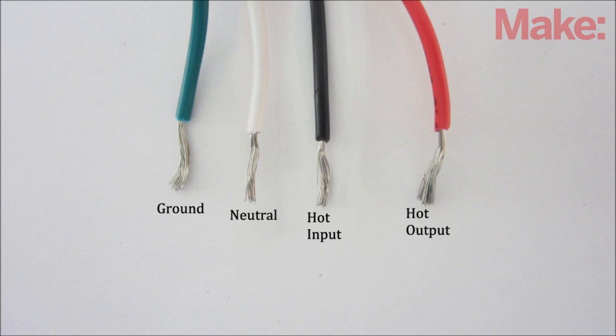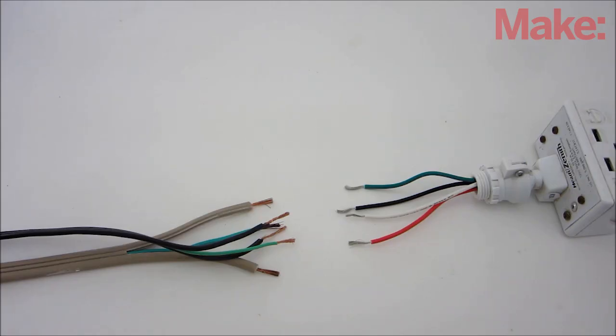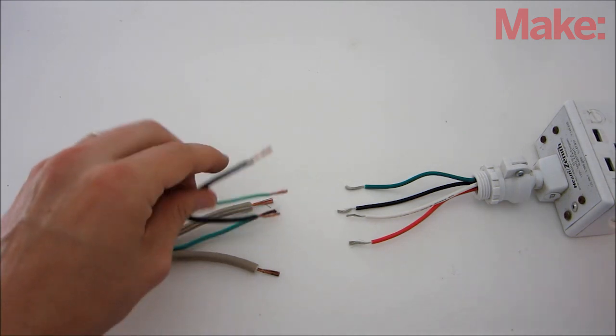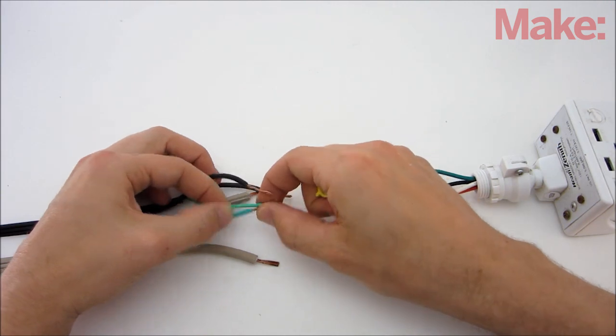Disconnect these wires from the attached lights. Then unscrew the motion sensor assembly from the mounting plate. Now you just need to connect the motion sensor to the two power cords. Start by separating all the internal wires from the power cords and stripping the insulation off the ends.